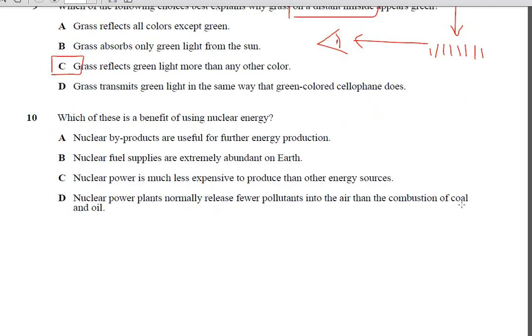Which of these is a benefit of using nuclear energy? And I know you've probably studied nuclear energy, but maybe not the specific concepts or ideas in these choices. A. Nuclear byproducts are useful for further energy production. Byproducts? Well, byproducts is nuclear waste. And nuclear waste is kind of a dangerous thing. And that's kind of the big debate about using nuclear energy. What do we do with all this dangerous waste? So it's not a benefit. So we're going to cross A out.